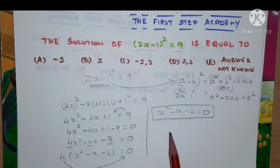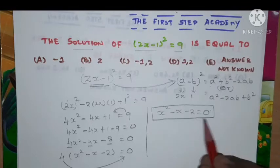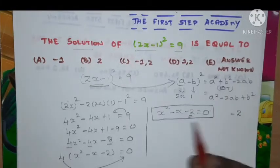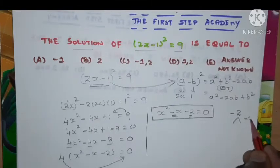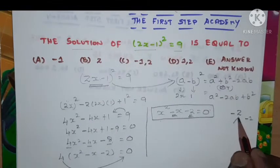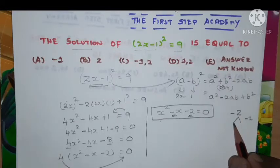So how can we factorize? Look at the constant term, it is minus 2. Look at here, it is minus 1. So when I'm multiplying two numbers, that should provide the value of minus 2.